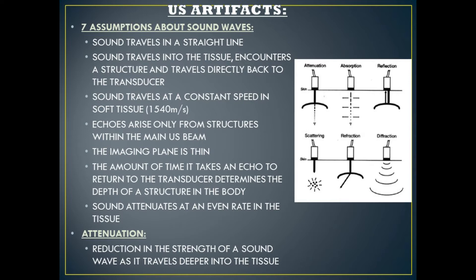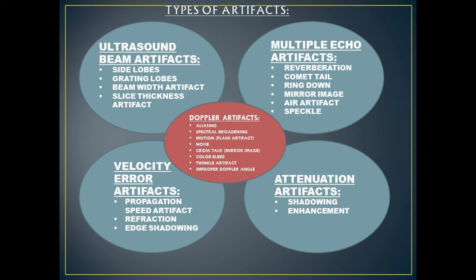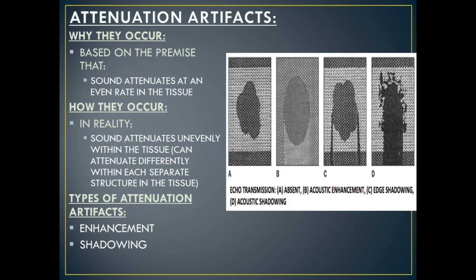If all of these things always occurred when performing an ultrasound, then we wouldn't have artifacts. There are five categories of ultrasound artifacts: ultrasound beam artifacts, multiple echo artifacts, velocity error artifacts, attenuation artifacts, and Doppler artifacts. Attenuation artifacts occur based on the premise that sound attenuates at an even rate in the tissue. In reality, sound attenuates unevenly within the tissue — differently within each separate structure and each tissue type.